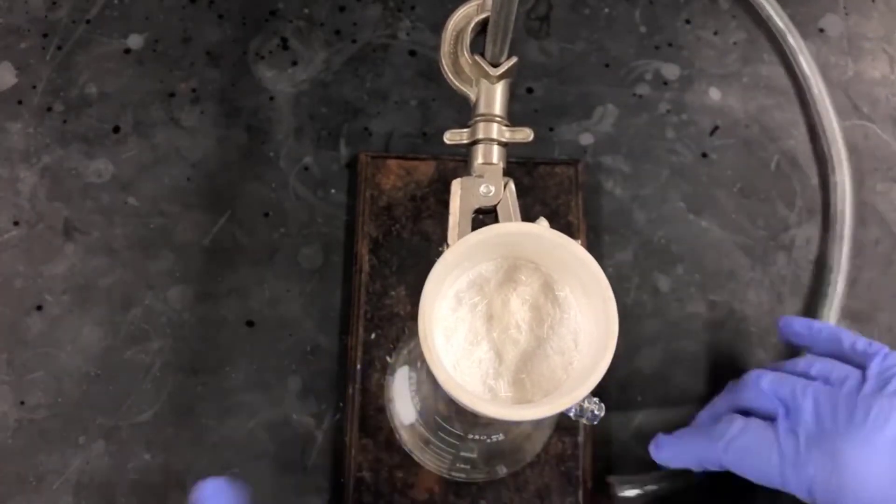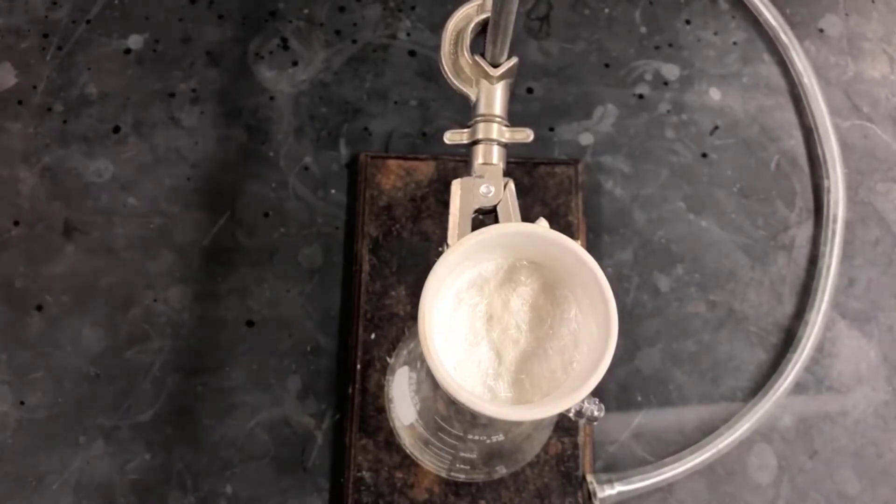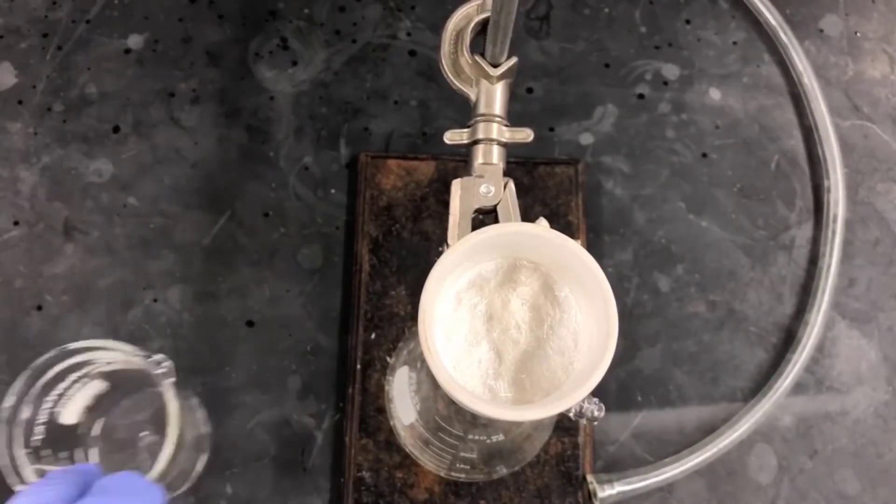Here again, I'm removing the hose to break the vacuum before I turn off the faucet. This prevents water from flowing into the filter flask.